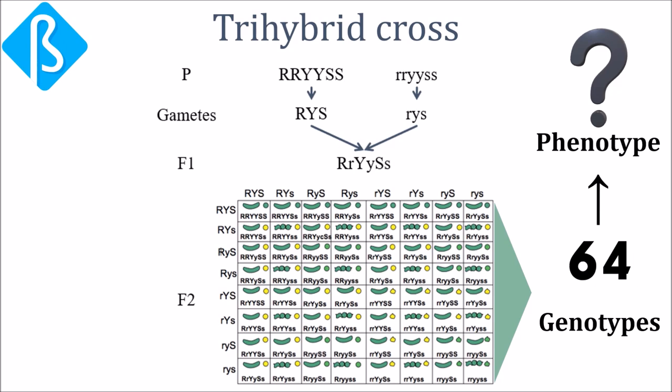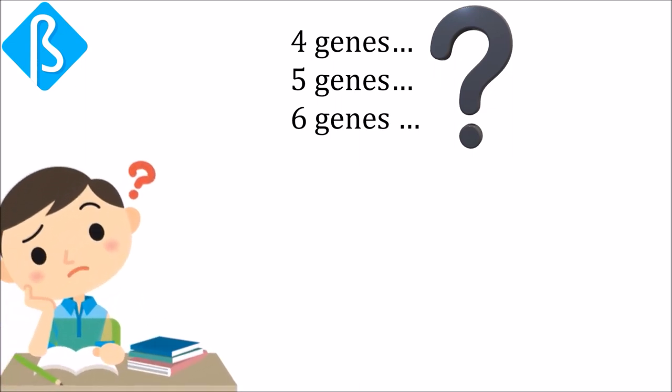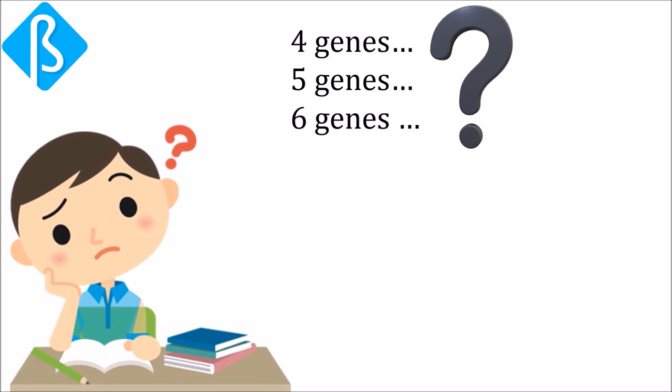But how many phenotypes? Isn't it pretty difficult to tell? Let's go further. What about tetrahybrid 4 genes, 5 genes, 6 genes and so on? Too tedious and confusing, isn't it? So does it mean we can't go for the prediction beyond 2 or 3 genes?